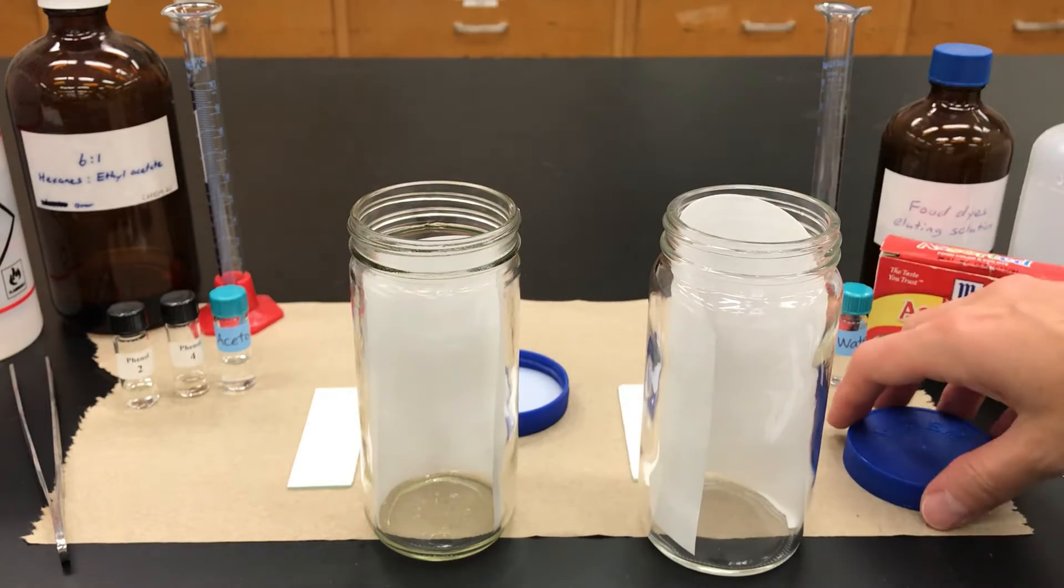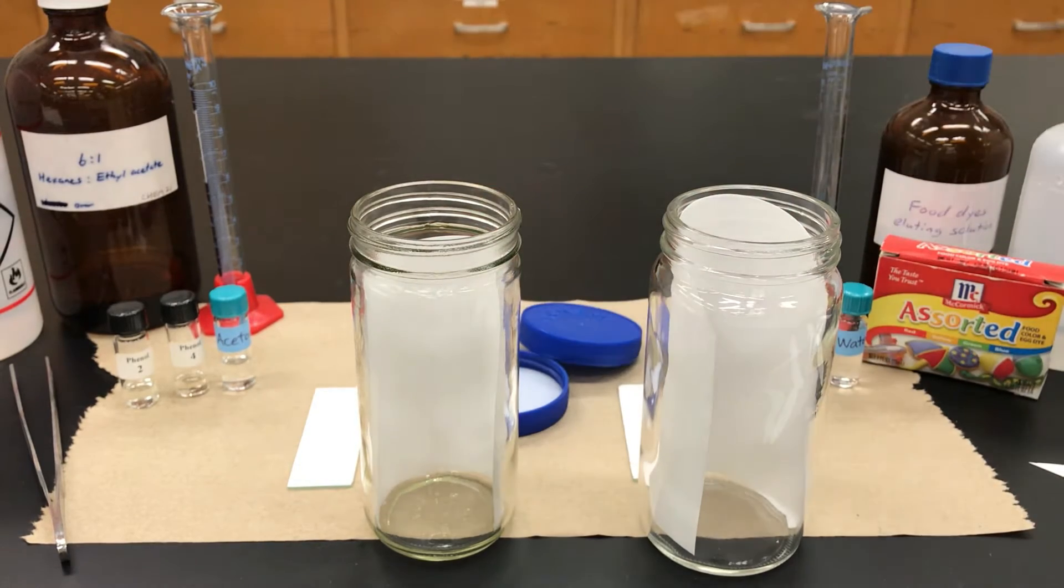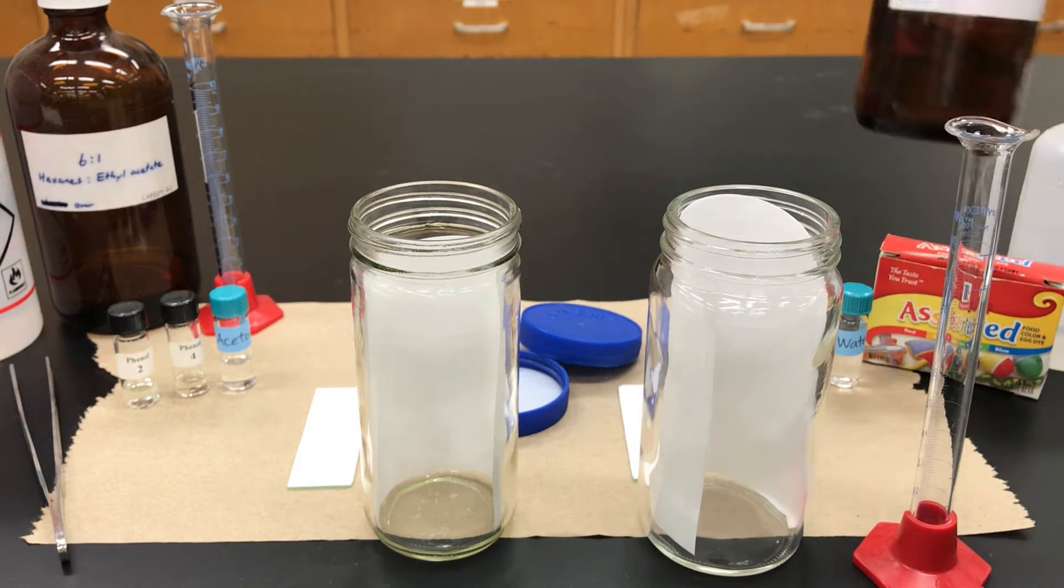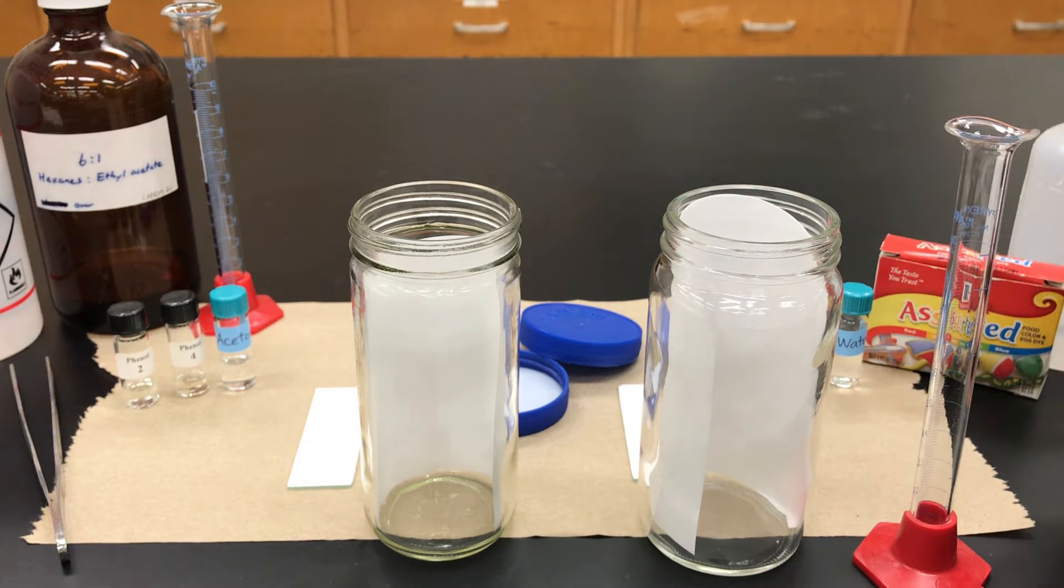Now I'm going to stick some liquid into these jars. So for the food dyes, I have a special mixture that's got some alcohols in it, a bit of ammonia, and I'm going to measure out 10 milliliters. It really depends on the size of your TLC jar.